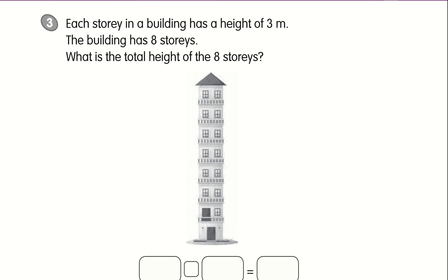Let's read the question. Each story in a building has a height of 3 meters. The building has 8 stories. What is the total height of the 8 stories? So remember our G, E, T. G stands for group, how many in each group, and the total. We know that each story in a building has a height of 3 meters, so our 'each' is 3.